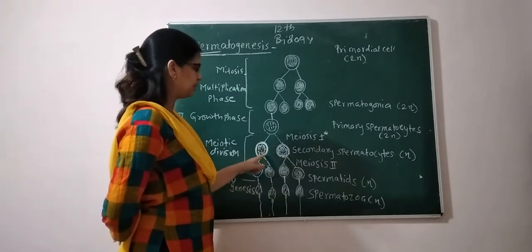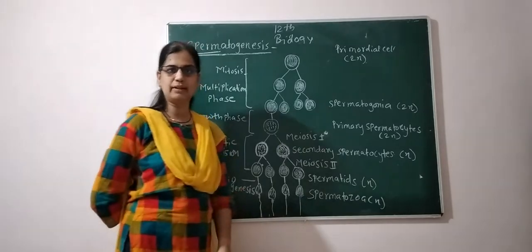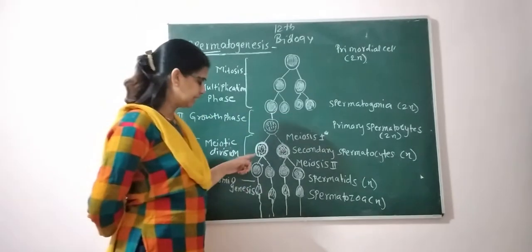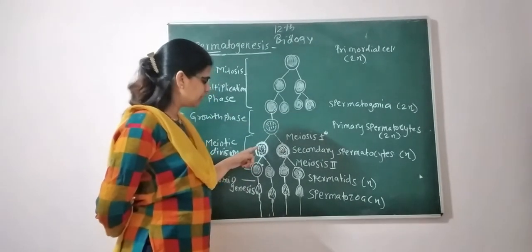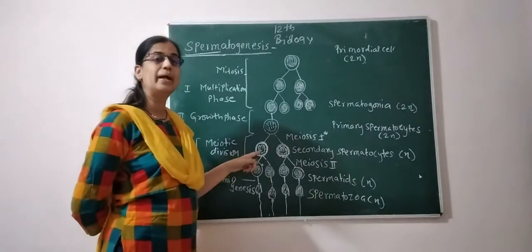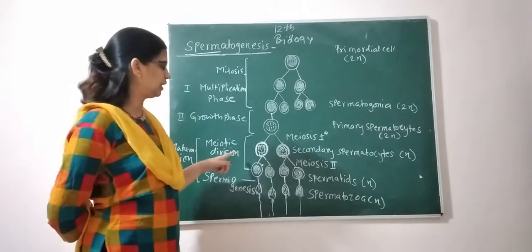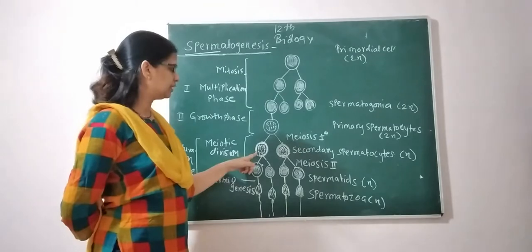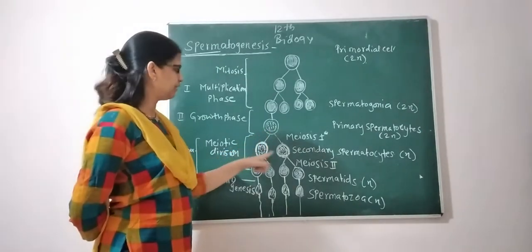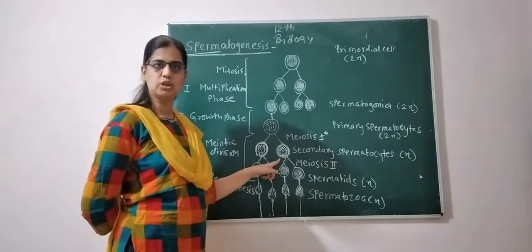The two haploid secondary spermatocytes each have 23 chromosomes. The original primary spermatocyte had 46 chromosomes, and after the reduction division these are split into 23 and 23 chromosomes in the two resulting cells.